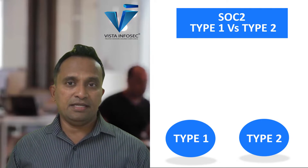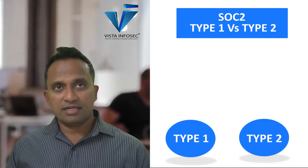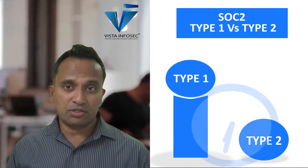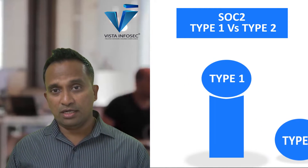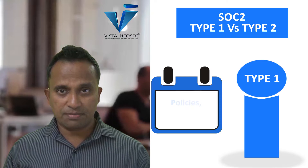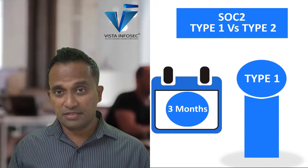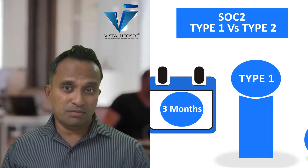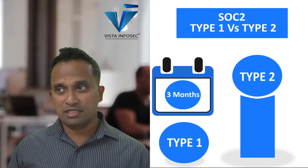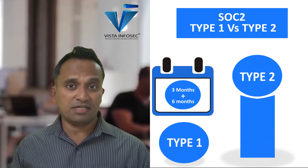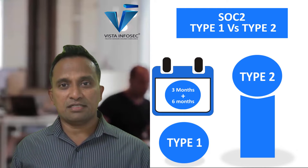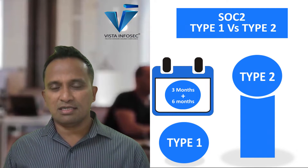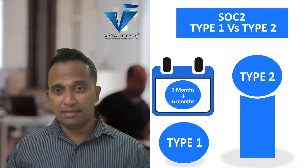If a client has any seriousness about the work to be done, they'll be asking for a Type 2. Rarely do clients ask for a Type 1 — and that only happens when they are very much pressed for time. For a Type 1, you need at least three months to get policies and procedures in place. For a Type 2, you need those three months plus five to six months for the gestation period and evidence collection, then the audit period, report generation — approximately ten months in total.